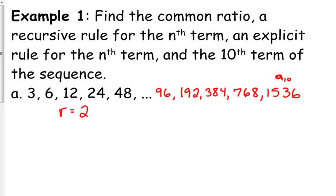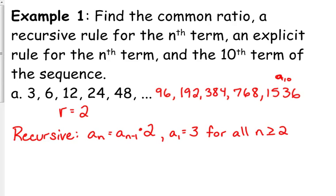Our recursive rule is a sub n equals a sub n minus 1 times the common ratio, which is 2. Remember, you've got to list the first term: a sub 1 equals 3 for all n greater than or equal to 2. Just so that we're used to seeing the other form, I'm going to do that as well: a sub k plus 1 equals a sub k times 2. Now typically in mathematical terms we would put that constant in front. a sub 1 equals 3 for all k greater than or equal to 1.